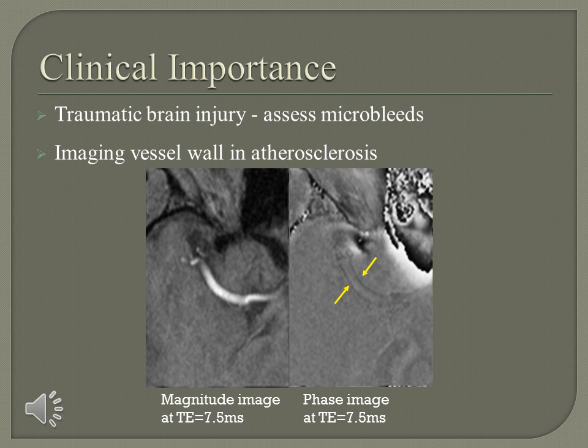We now discuss the clinical importance of our new sequence. Besides the clinical use of the traditional SWI sequence, we can also image vessels in atherosclerosis. Because the arteries in the short echo images have no shift — due to flow compensation in the phase encoding and partition encoding directions — we are able to assess vessel walls and study the source of middle cerebral artery stenosis.